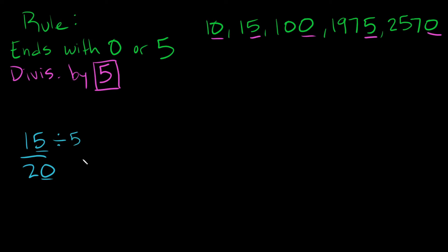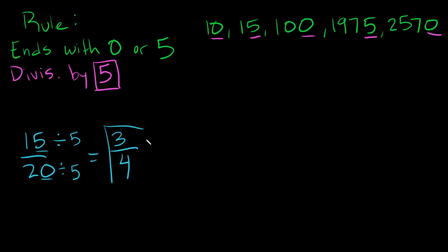So we do 15 divided by five and 20 divided by five. Fifteen divided by five is three, and 20 divided by five is four. Is this as reduced as possible? Yes. Three is a prime number — it's only divisible by one and three. Two can fit into four, but two cannot fit into three evenly. So this is as reduced as possible, and five is our greatest common factor.